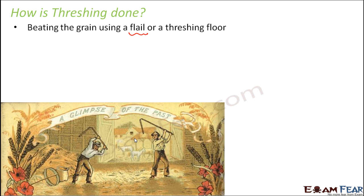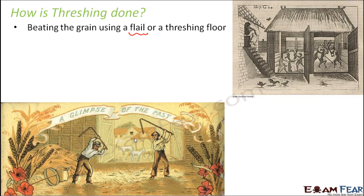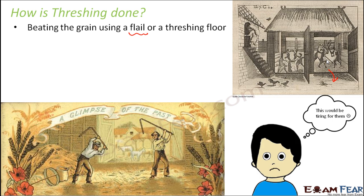We want to separate the two because we are interested in the grains and do not need the stocks. In the picture you can see the threshing floor covered with stocks and grains, and many people are manually beating the grain to separate them. This entire process is manual — all human effort — and it is a very tiring and time-consuming task.